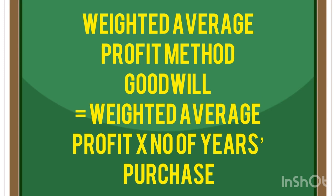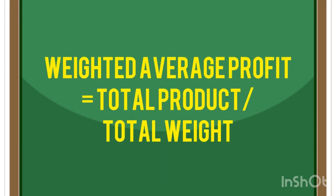That is the simple average profit method. Now we will try the weighted average profit method. The equation is: Goodwill equals Weighted Average Profit multiplied by Number of Years' Purchase. The weighted average profit is calculated as total product divided by total weight.